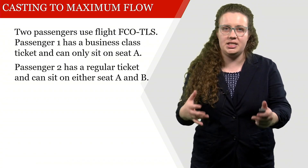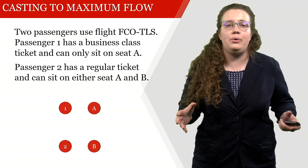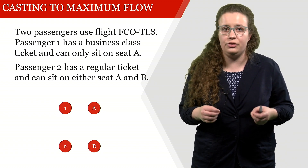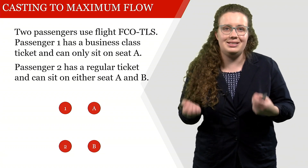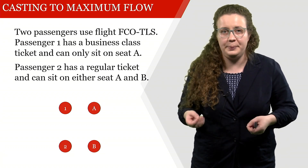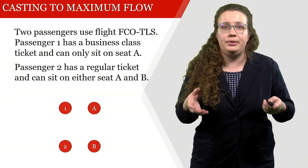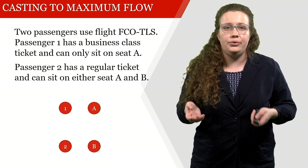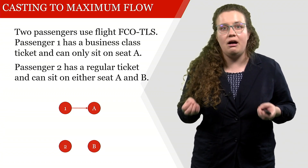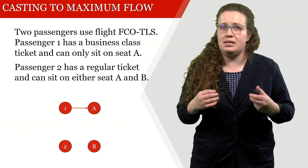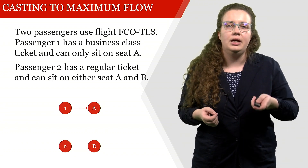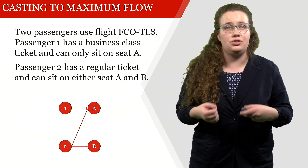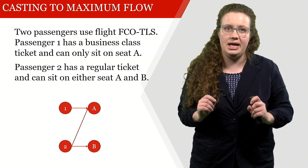We want to cast this to a maximum flow problem, which means we need some nodes. On the left we have the passenger nodes, one and two, and on the right we have the seat nodes, A and B. We have an arc from one to A, meaning passenger one can only sit on seat A. We have two arcs going out of node two — one to A and one to B — because passenger two has a regular ticket and can sit on both seat A and seat B.